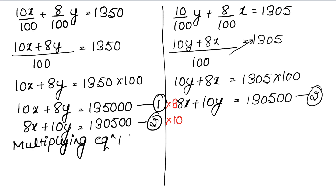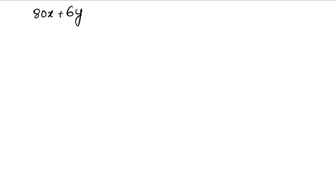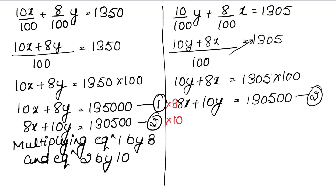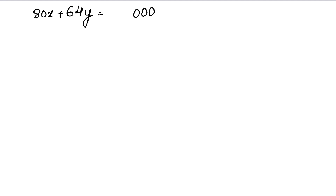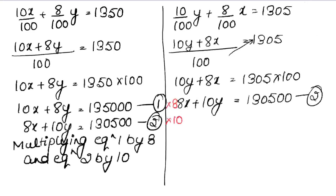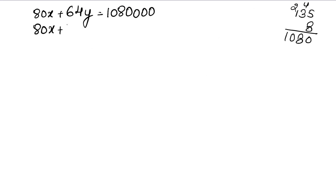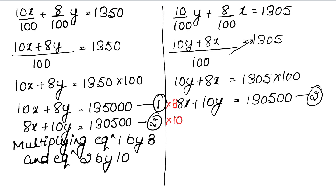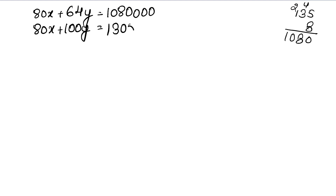Now multiply equation 1 by 8 and equation 2 by 10. Equation 1 × 8: 80x + 64y = 135 × 8 × 1000 = 1,080,000. Equation 2 × 10: 80x + 100y = 1,305,000.